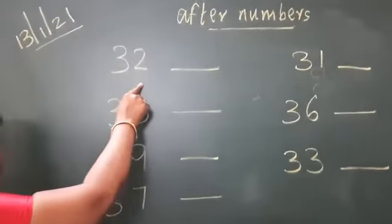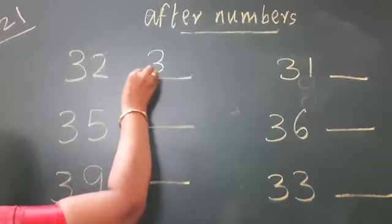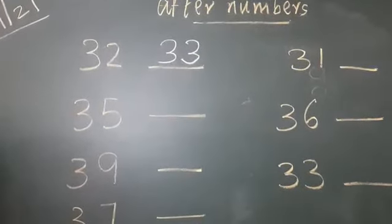Which number comes after 32? 3, 2, 32. Which number comes after 32? Yes. 3, 3, 33. Okay. Good.